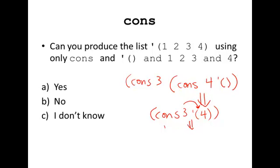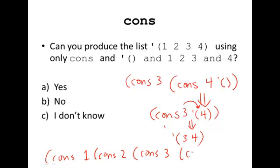So to get the full answer, I can do cons one to cons of two to cons of three to cons of four and the empty list. And in each case, what cons will do is it will take the first argument and make it the first of the list and the second argument and make it the rest of the list. So the answer here is yes.